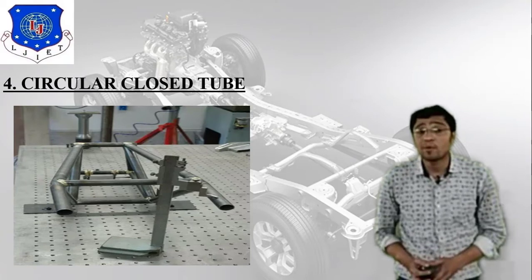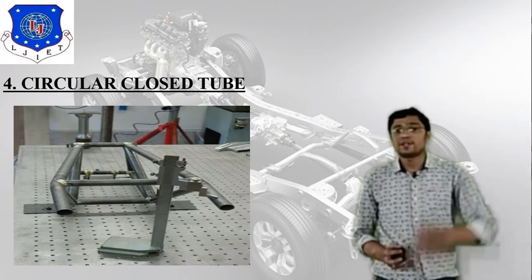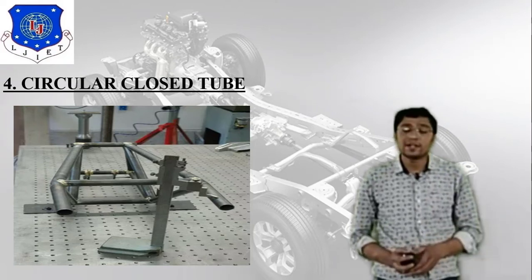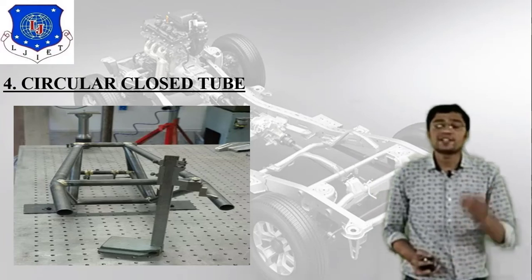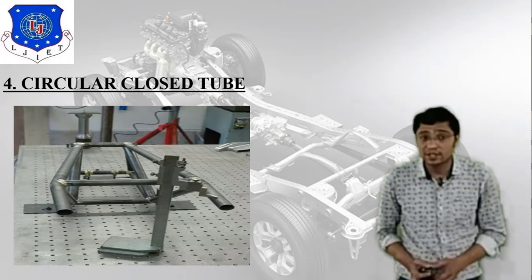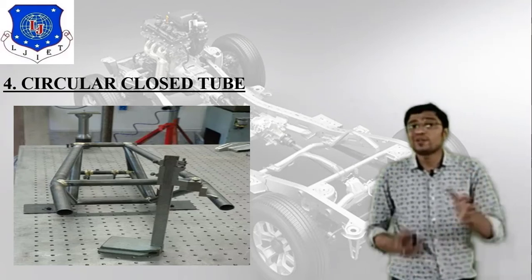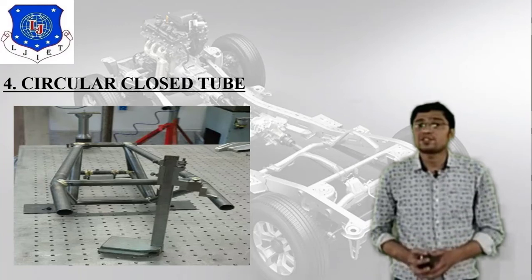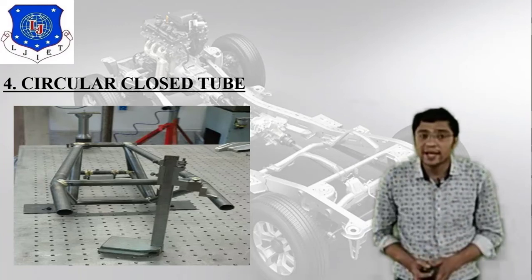The fourth type is the circular closed tube. An image is attached directly related to the circular closed tube. Generally, it is useful in racing cars and sports cars, and it is very different from the circular tube with longitudinal slit.